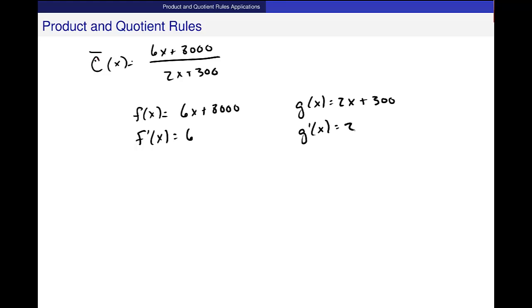g prime of x is equal to 2x, or just 2, right? Okay, so these are both linear functions in the numerator and denominator. I expect that rate of change for them individually to be this line, to be just a constant rate of change.